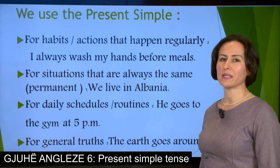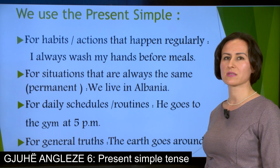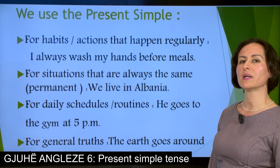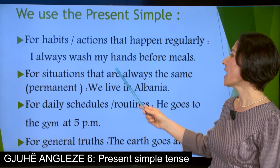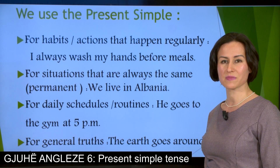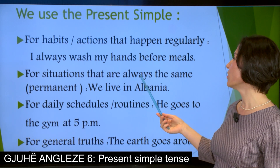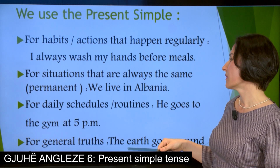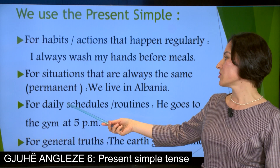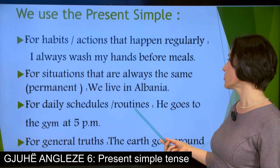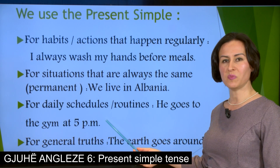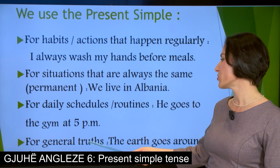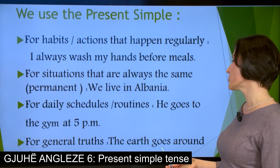How and when can we make use of this tense? We use the present simple for habits or actions that happen regularly — for example, I always wash my hands before meals. For situations that are always the same, permanent ones — for example, We live in Albania. Also for daily schedules or routines: He goes to the gym at 5 p.m. And for general truths: The earth goes around the sun.